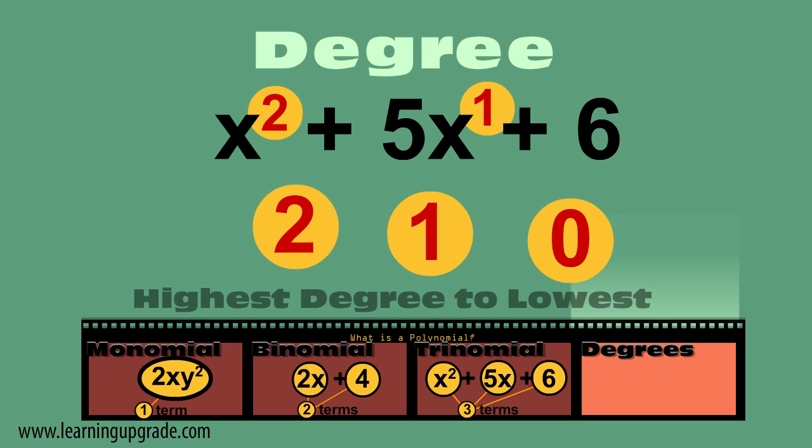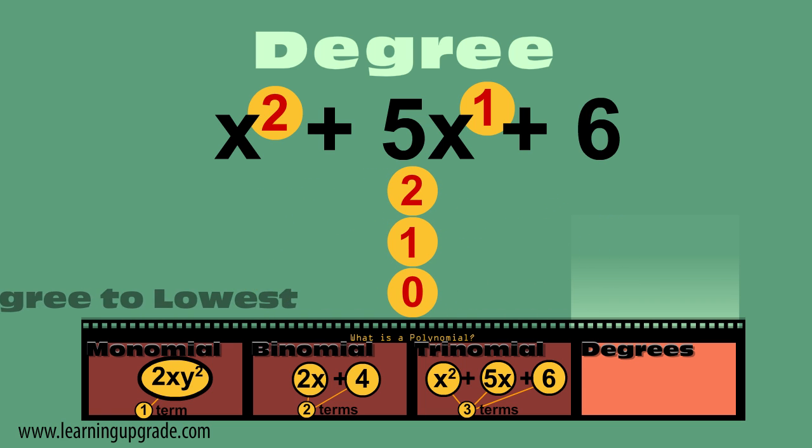What's the order? Put the terms in order from the highest degree to the lowest. x squared degree 2 first, 5x degree 1, 6 degree 0 is last.